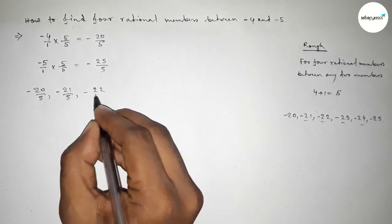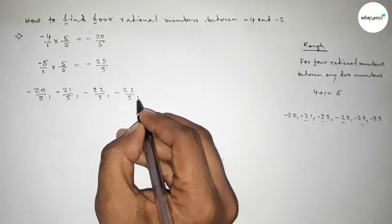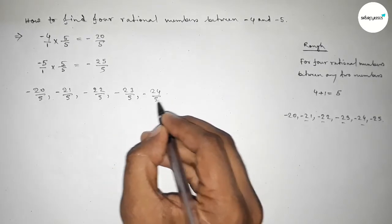Now forming all the rational numbers here. So minus twenty over five, minus twenty-one over five, minus twenty-two over five, minus twenty-three over five, minus twenty-four over five, and